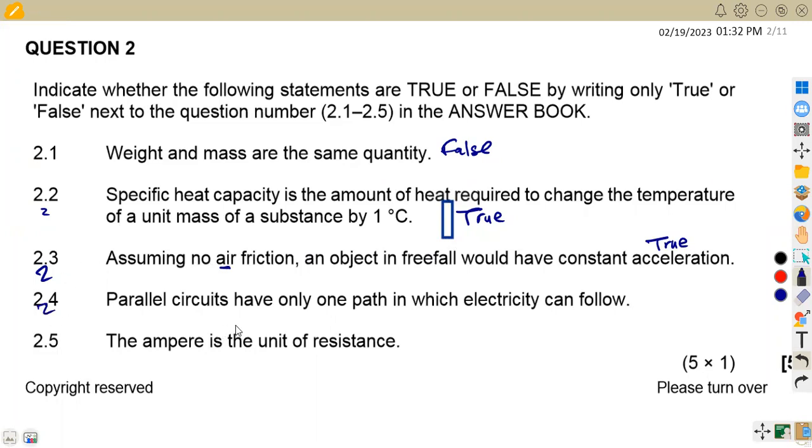2.4, parallel circuits have only one path in which electricity can flow. This is wrong. Check a parallel circuit - we have a circuit of this nature. Remember, the flow of current, if at this point the current is going to branch here and here, so it has got no same direction. It can only have one path in a series circuit. For a parallel circuit, this is false.